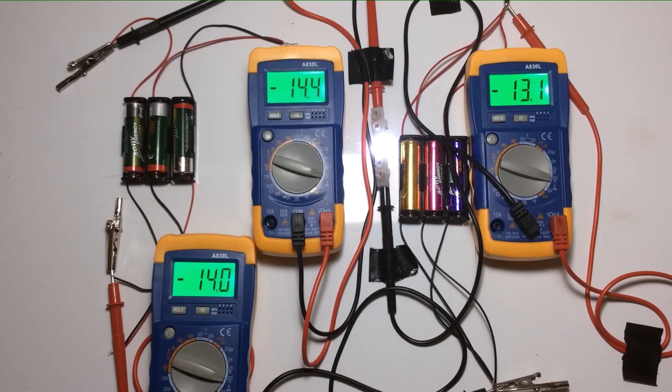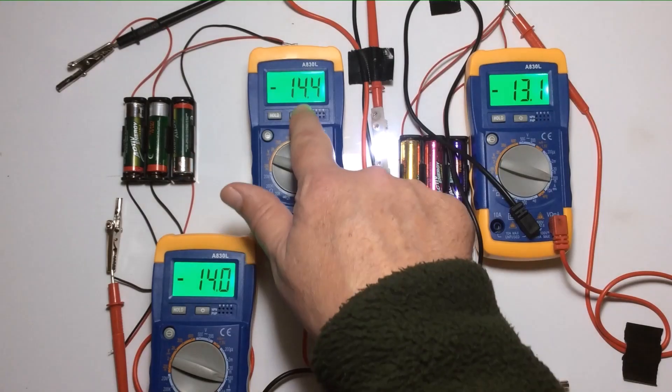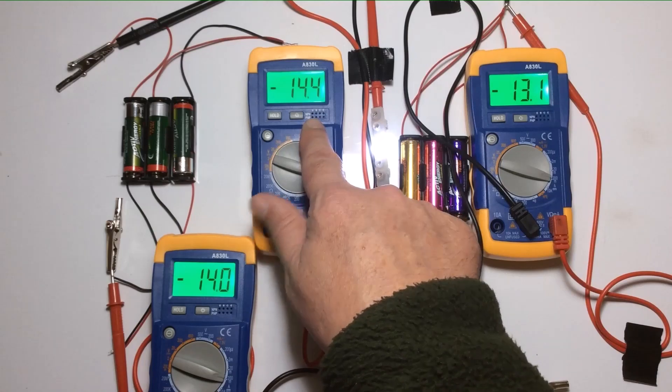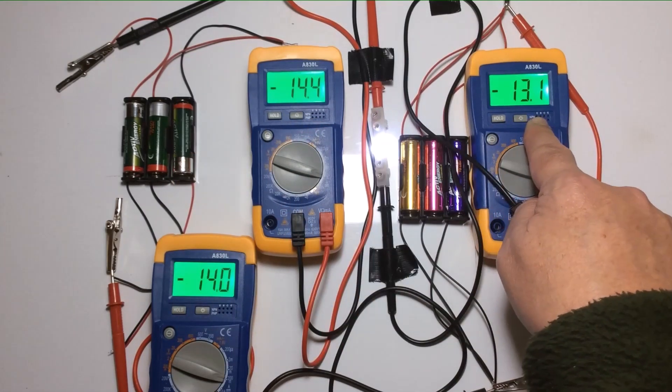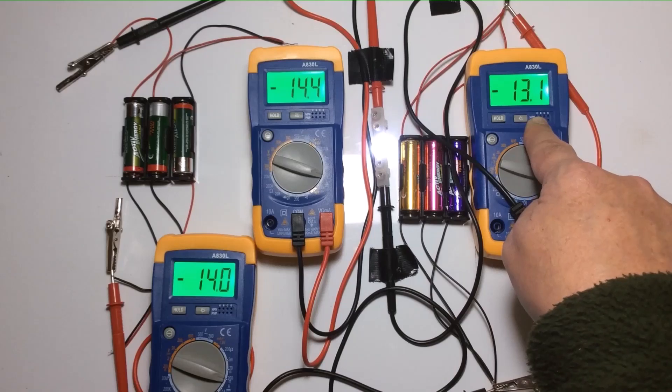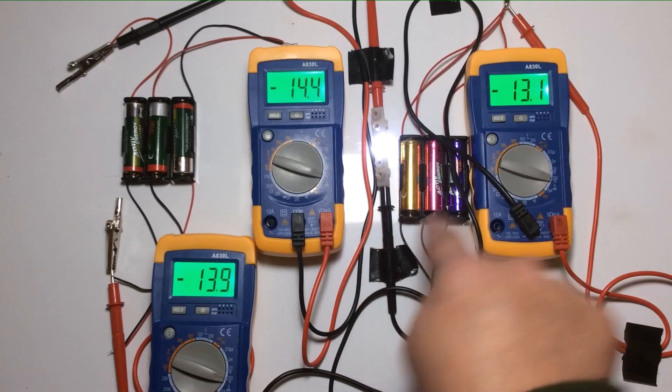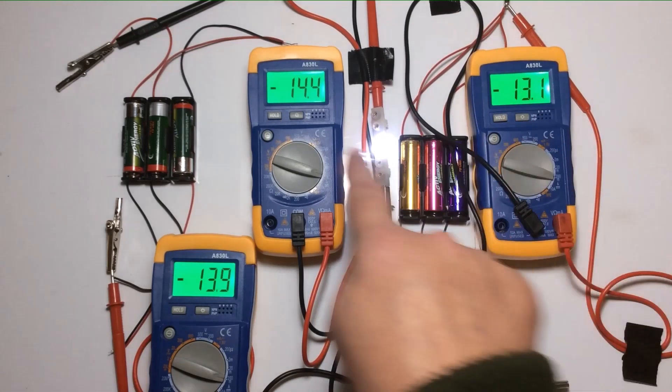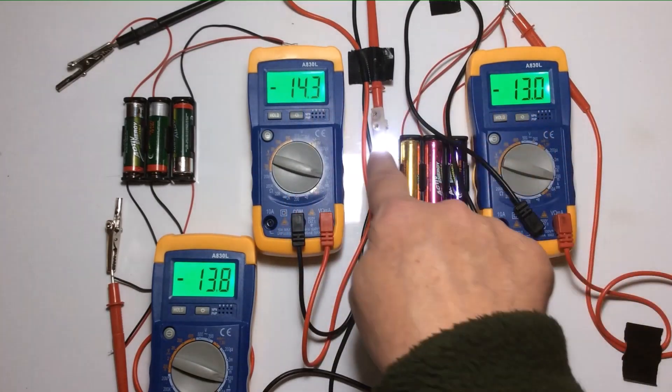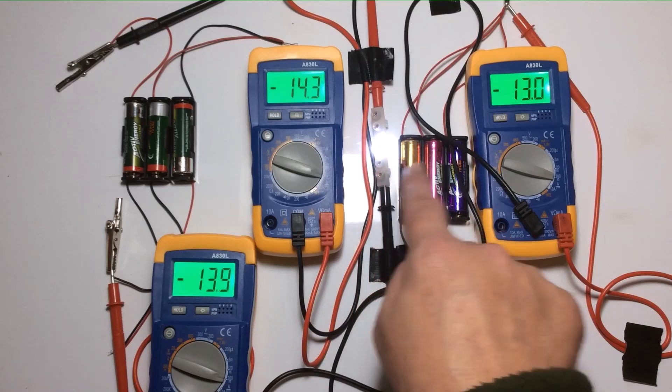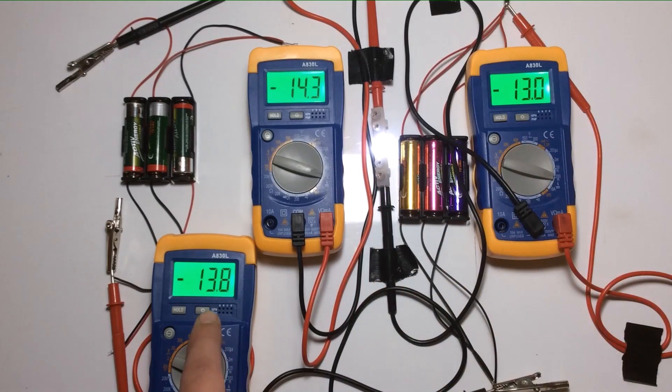What I don't understand is 14.4 milliamps coming out of the primary battery. Only 13.1 milliamps is coming out of the load, which is normal. You would expect that you're going to have your load wasting some of that energy as heat. But what's going on here?